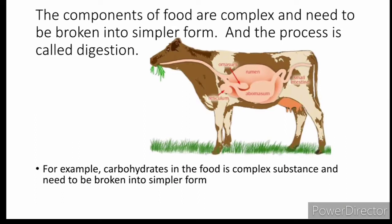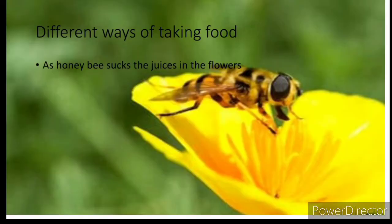The components of food are complex and need to be broken into simpler form. The process which helps in breaking complex substances into simpler form is called digestion. Carbohydrates in the food are complex substances and need to be broken into simpler form to be absorbed by the cells of the body.